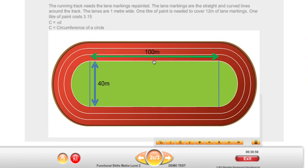We need to know how long these lines are around the track. This is where thinking about compound shapes comes in. There isn't an easy way to measure the length of this line around this shape because it's not a regular shape — it's more like a sausage shape. It's a shape made up of other shapes. If we can work out the regular shapes involved, it will make it a lot easier.